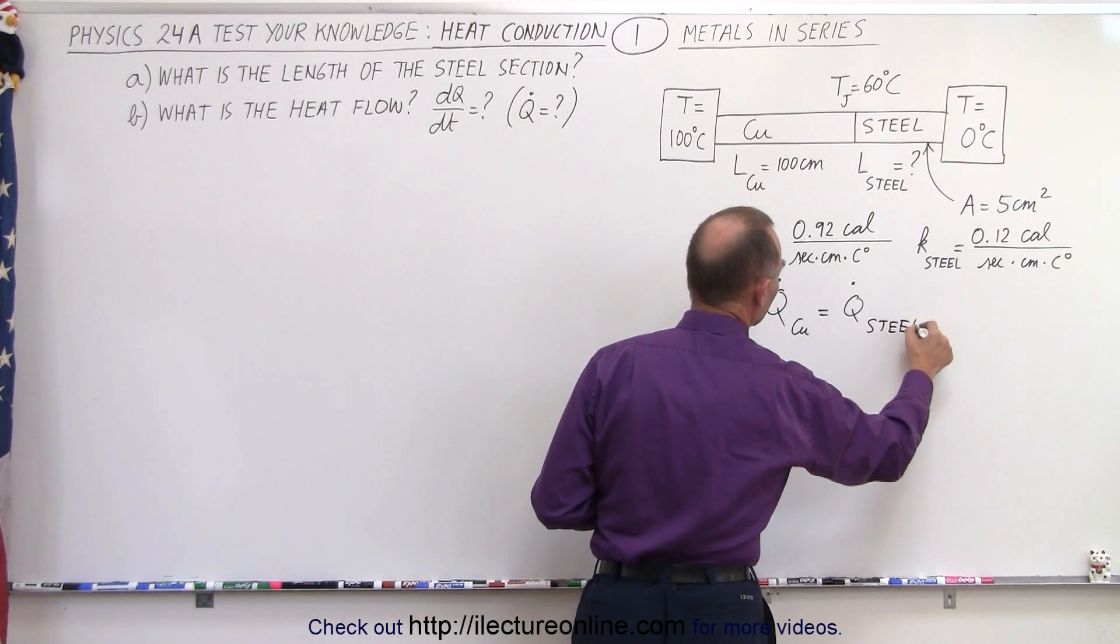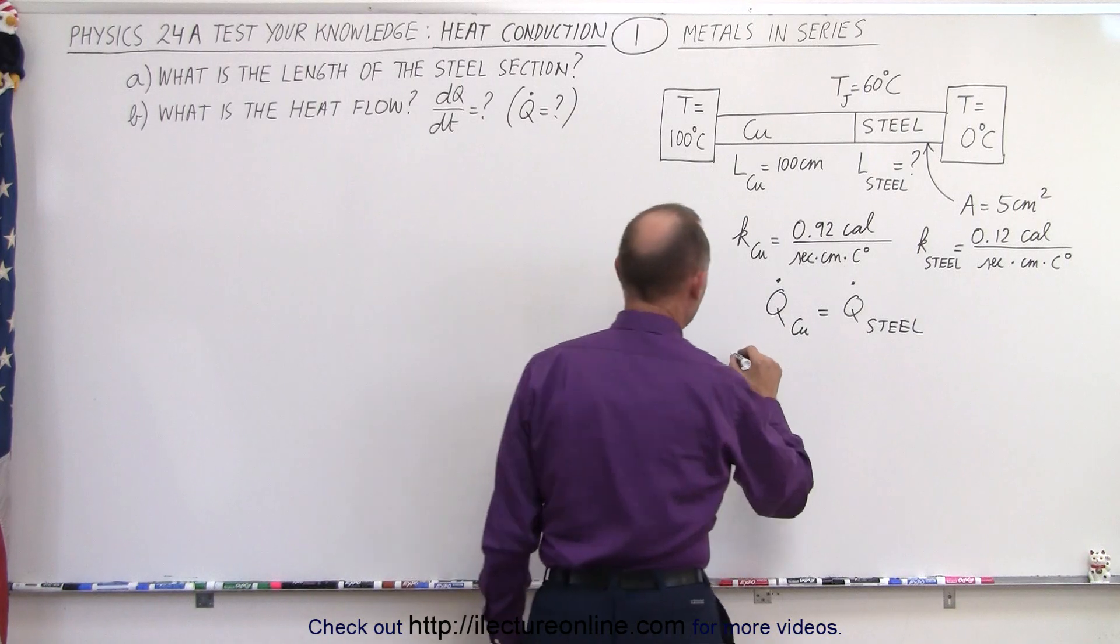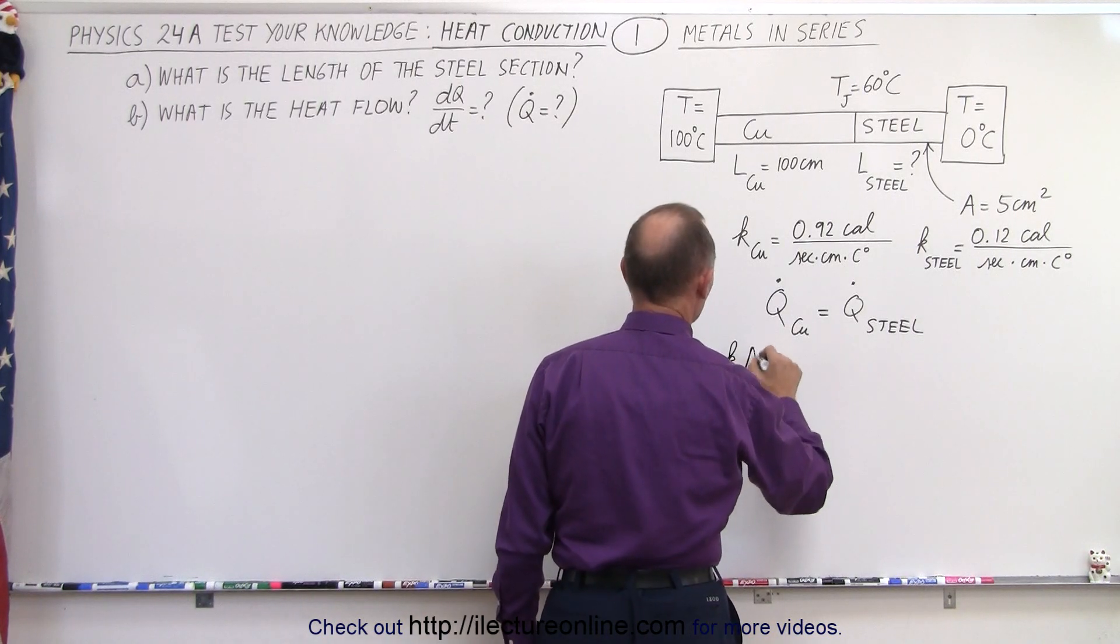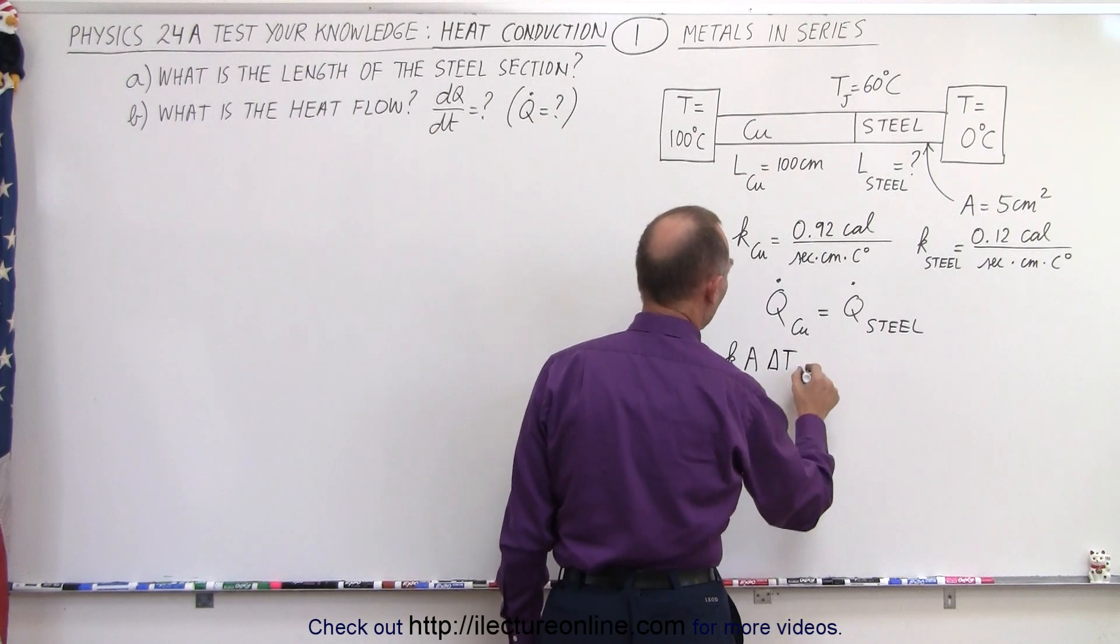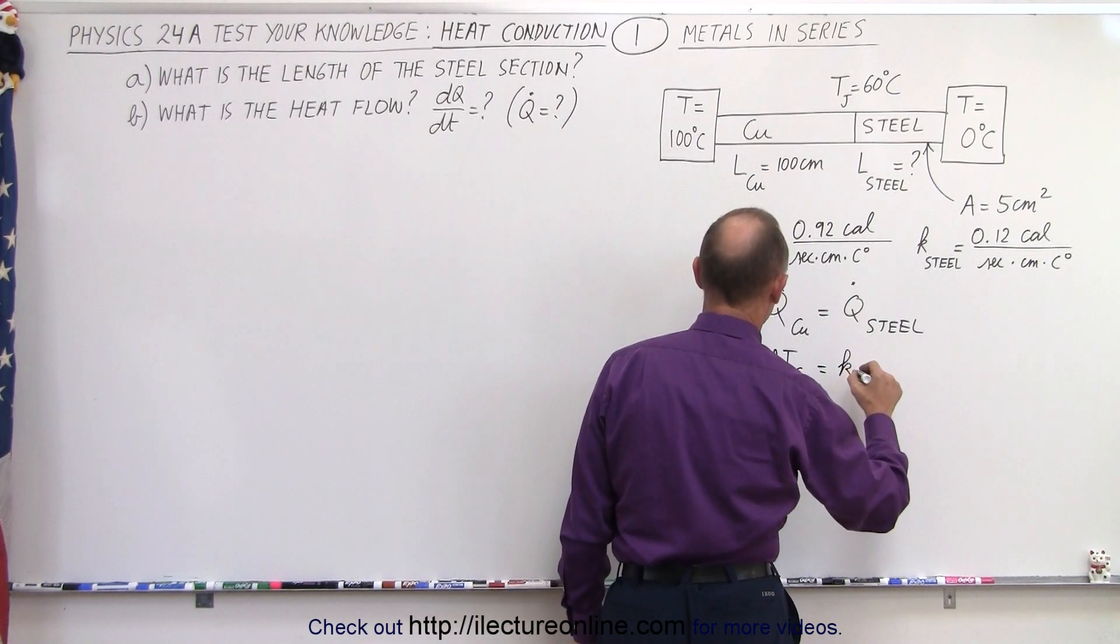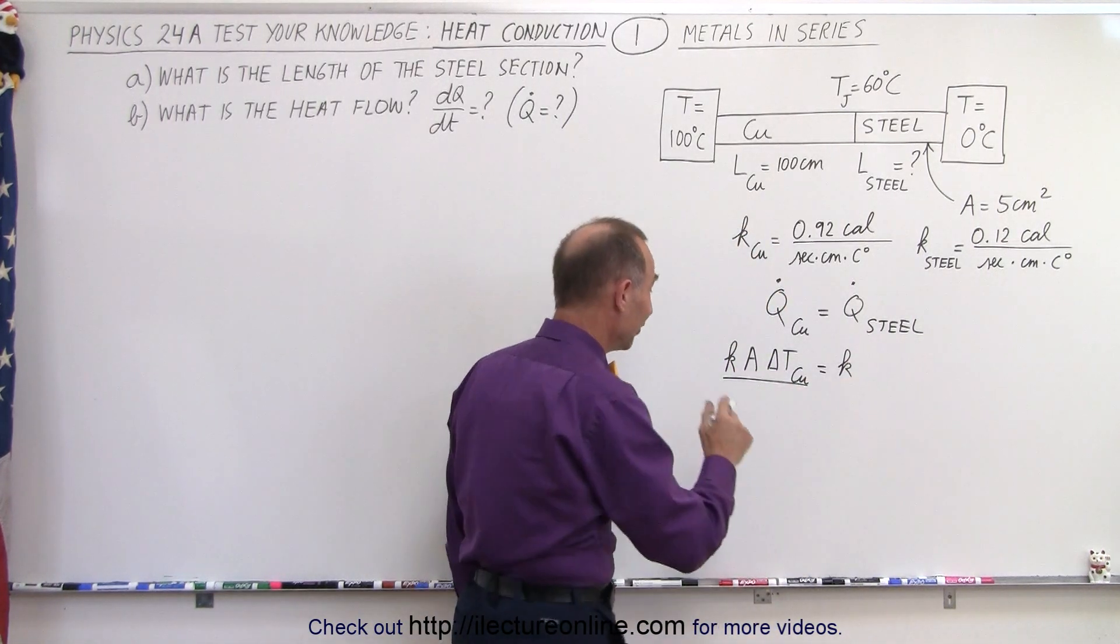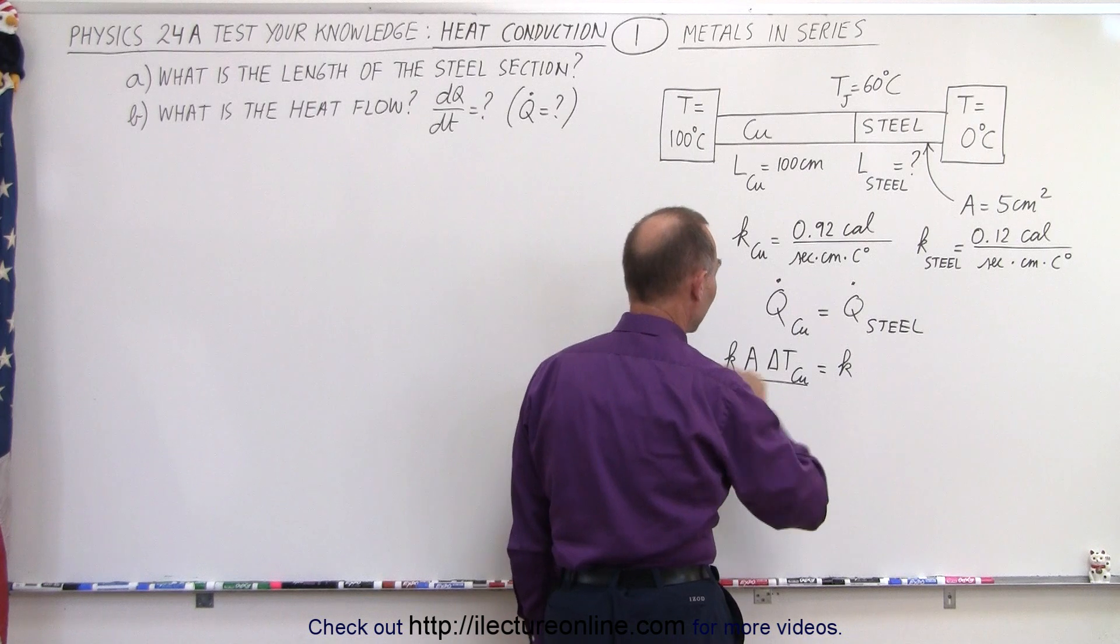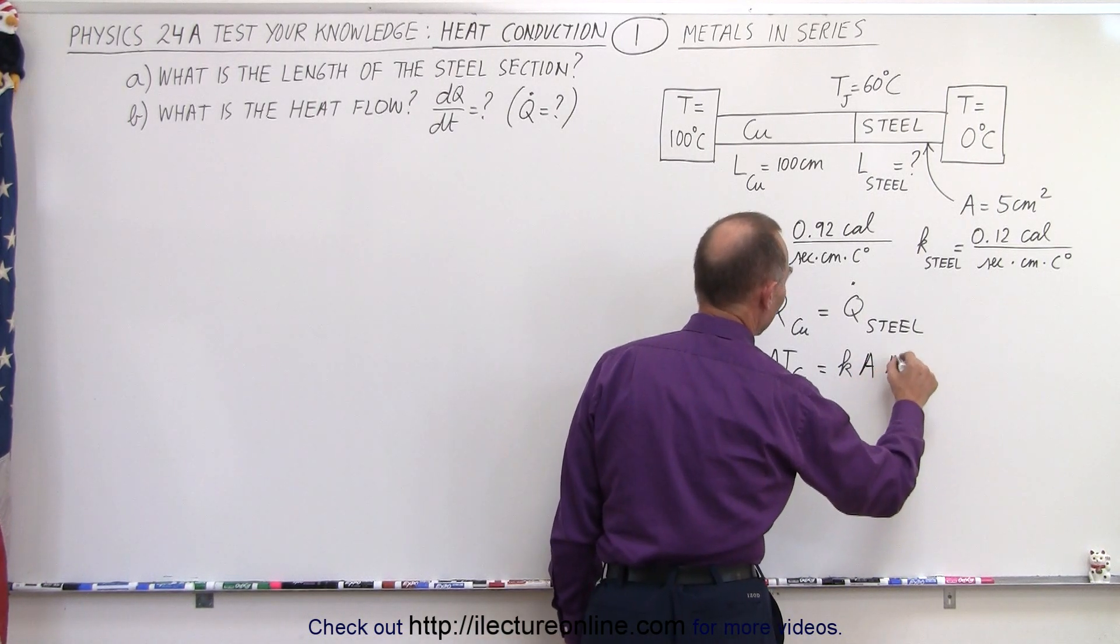And of course now we need an equation associated with that. The equation is that k times the cross-sectional area times the difference in the temperature for copper divided by the length through that section is equal to k times the cross-sectional area times the change in the temperature for steel.